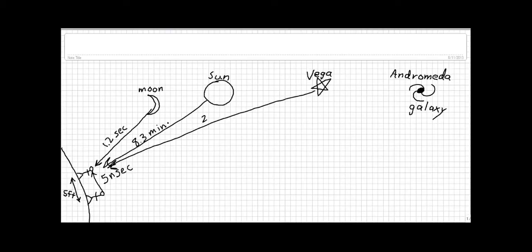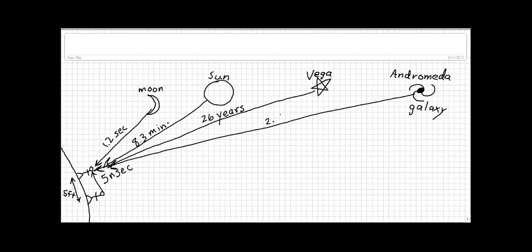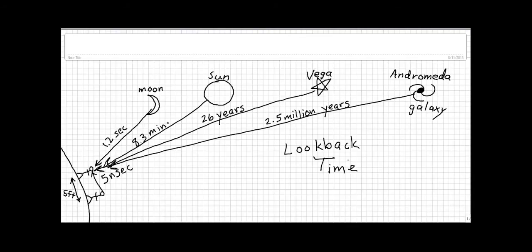The stars are even farther away. The star Vega, for example, is about 26 light years away, which means its light takes 26 years to get to you. And even farther away than the stars are the galaxies. The Andromeda galaxy is about 2.5 million light years away, so its light takes 2.5 million years to get to you. This phenomenon is called look-back time. On terrestrial scales it's so small as to be negligible, but on astronomical scales — like stars and galaxies — the times become quite noticeable.